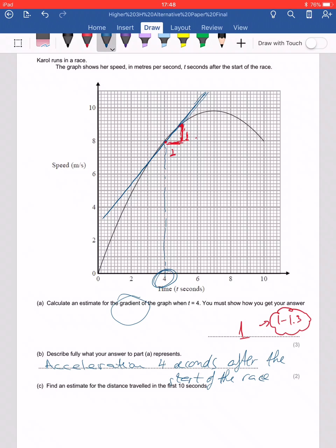Next, even more fun. Find an estimate for the distance traveled in the first 10 seconds. When you get a graph like this, the distance is the area under the curve. It's asking us for the first 10 seconds. It doesn't say use so many strips of equal lengths, so we have to make an executive decision. It's usually a good idea to use strips of equal lengths.